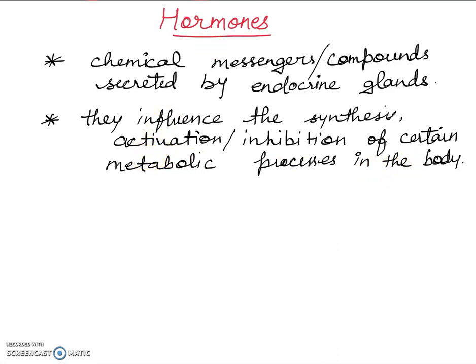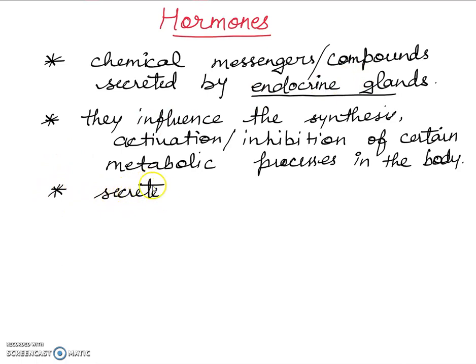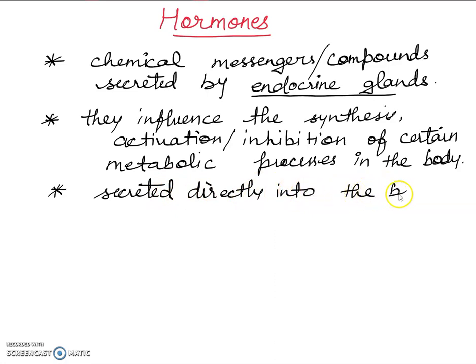As discussed in the last lecture, endocrine glands are ductless glands. The hormones from these ductless glands are secreted directly into the bloodstream and are carried by blood circulation.